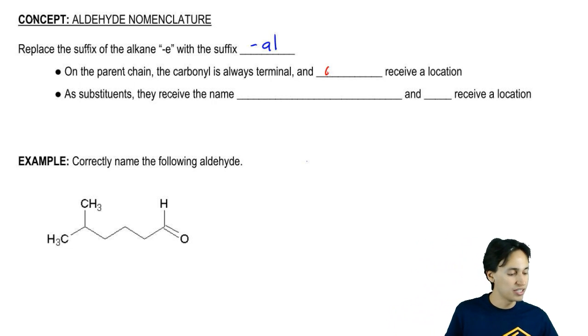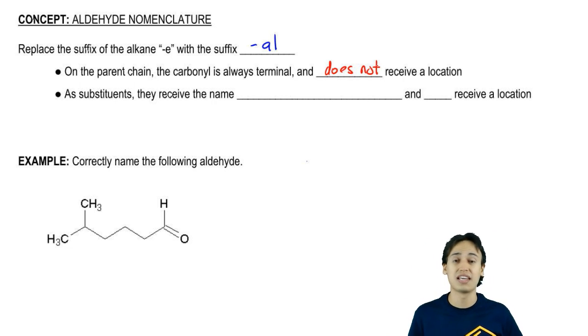What that means is that we don't need to number them the same way we would number other functional groups. In fact, it does not receive a location. You would never say that something is a one-ethanal.